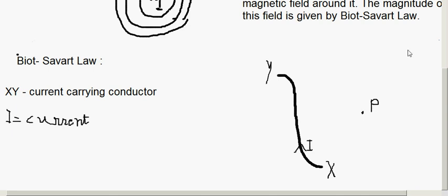P is the point where we want to find out the magnetic field. For this reason, instead of considering the whole conductor, we consider a small current element DL — a very small element of the conductor. Let P be the point where we want to find out the magnetic field due to this small element DL, and let the distance between P and DL be R.